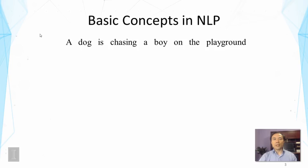We're going to take a look at the basic concepts in natural language first. I'm going to explain these concepts using a simple example: 'A dog is chasing a boy on the playground.' When we read such a sentence, we don't have to think about it to get the meaning. But when a computer has to understand the sentence, it has to go through several steps.